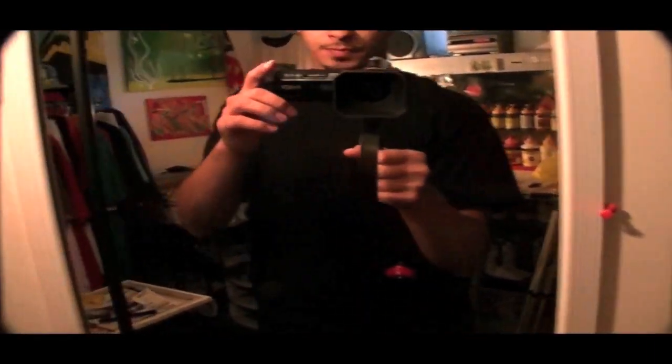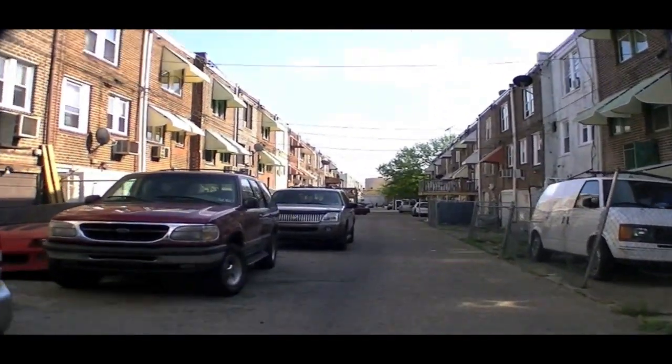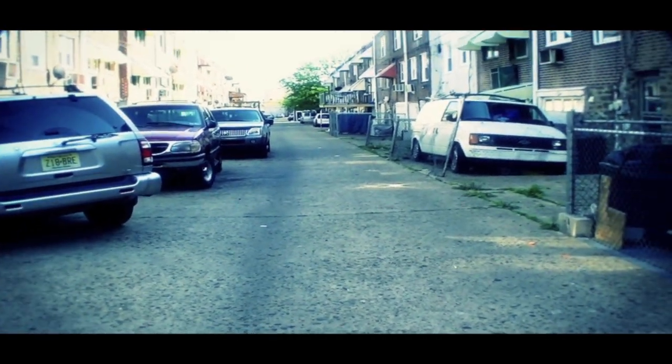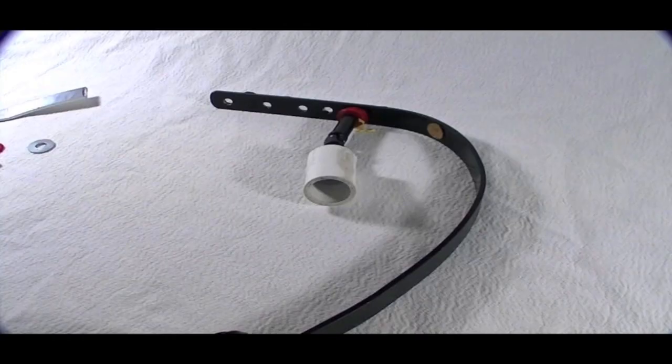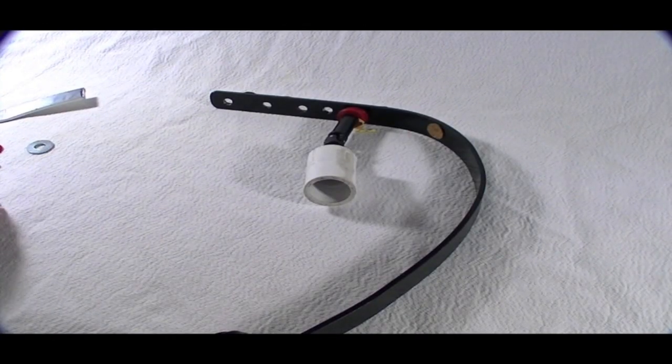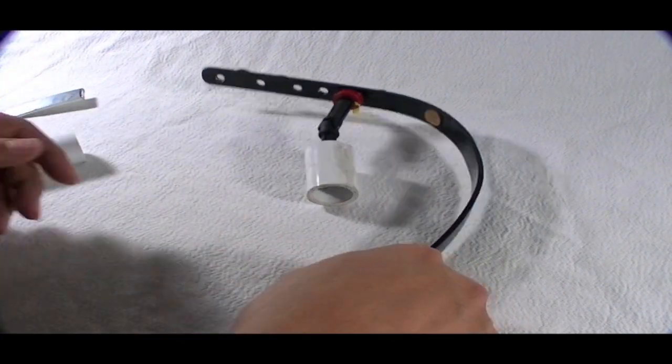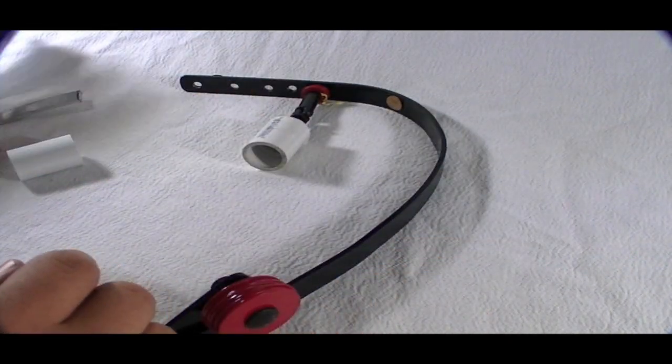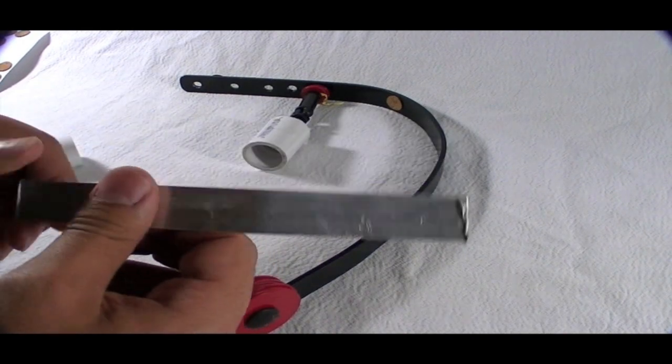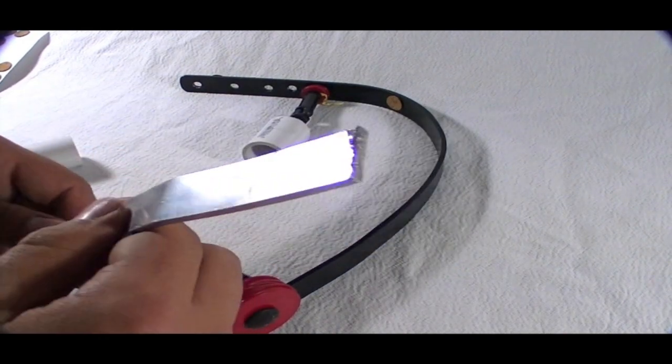All right. So here we go, we have the parts, all the materials you need to make this camera stabilizer. First off, we're going to start with the aluminum rod pole, whatever you want to call it.